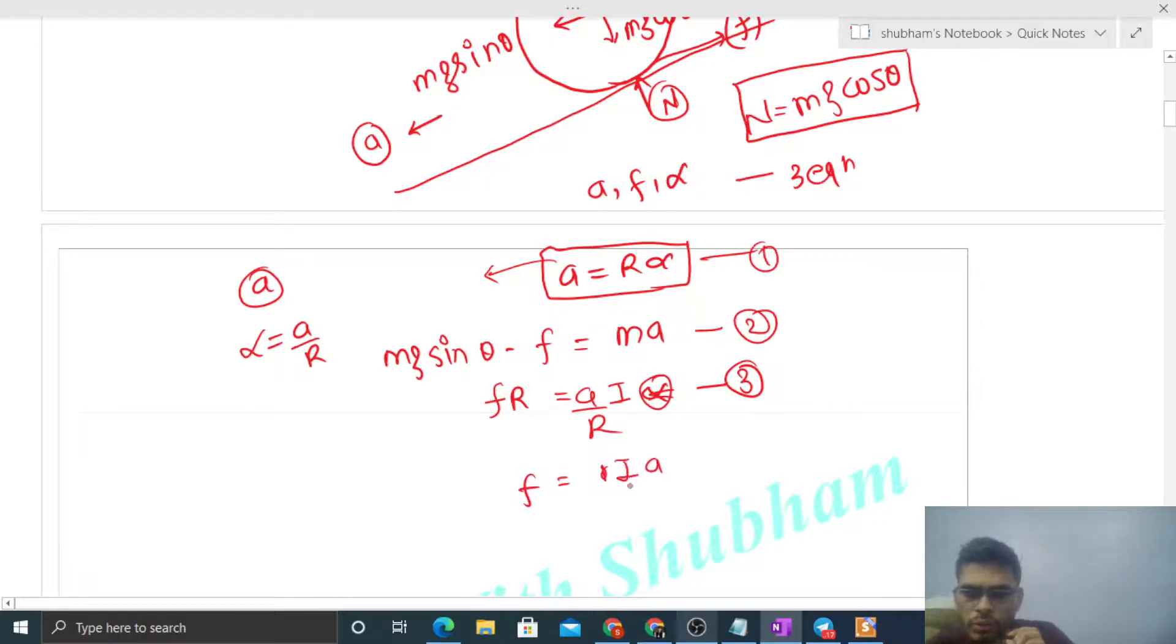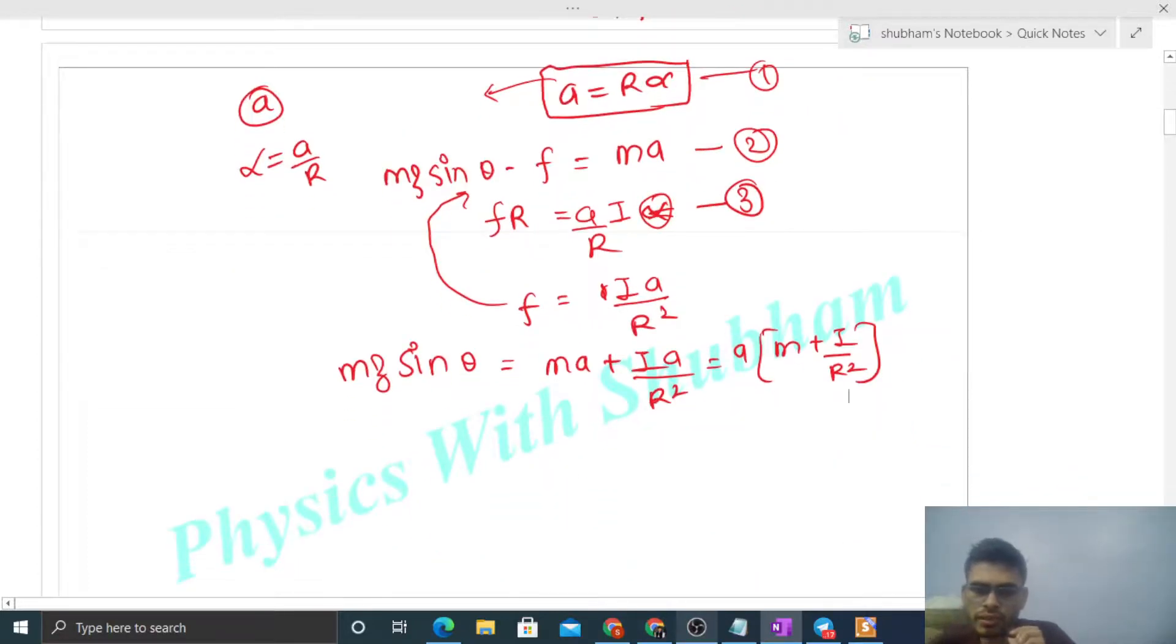Putting friction into mg sin theta equals ma plus friction, we get mg sin theta equals ma plus I times a upon r squared. Taking acceleration common: m plus I upon r squared. The acceleration value is mg sin theta divided by m plus I upon r squared.